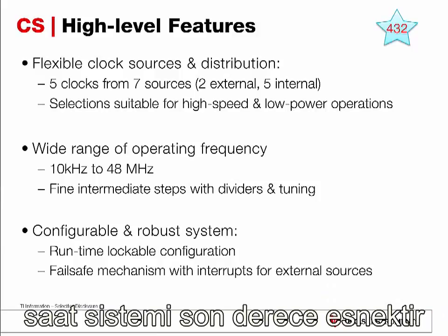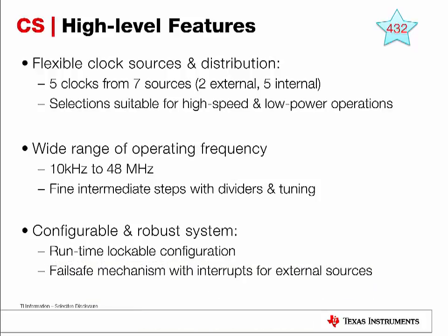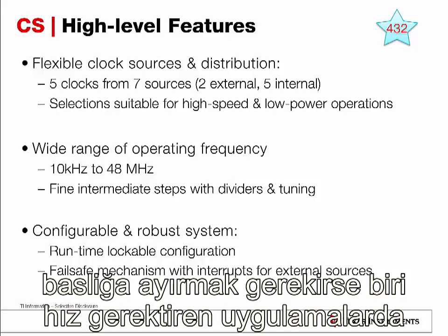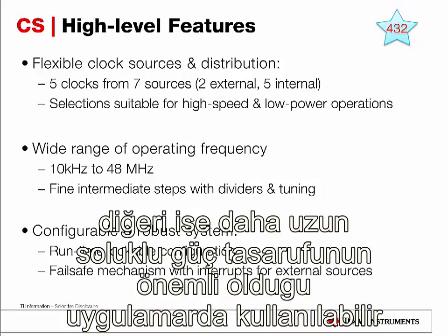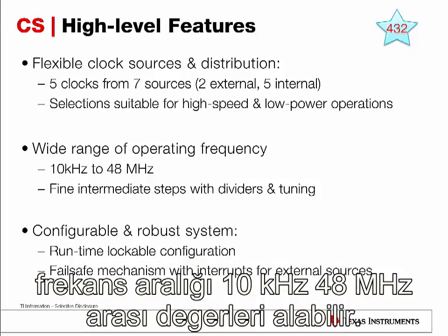From a high level, the clock system on MSP432 is highly flexible with a wide array of clock sources and distributions that you can essentially mix and match. The clock systems are divided into two domains: one suitable for high-speed, high-performance operations, while the second one is more optimized for ultra-low power consumption. These two clock groups can be combined to cover a wide range of operating frequency, starting at just 10 kHz all the way to 48 MHz.